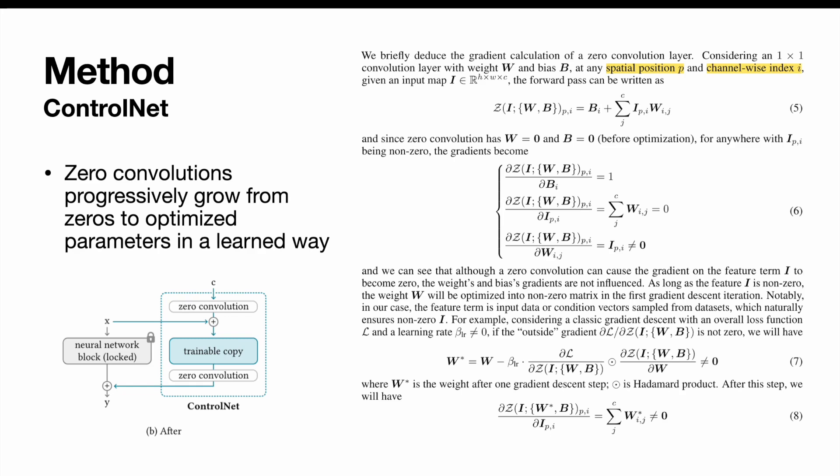The author also provided a brief deduction about the gradient calculation of a zero convolution layer. We can see that although a zero convolution can cause the gradient on the feature term i become zero, the gradients of weights and biases are not influenced. As long as the feature i is non-zero, the weights will be optimized into a non-zero matrix in the first gradient descent iteration. And in this case, the feature term is input data or condition vectors sampled from datasets, which naturally ensures non-zero. In this way, the zero convolutions become a unique type of connection layer that progressively grow from zeros to optimize the parameters in a learned way.